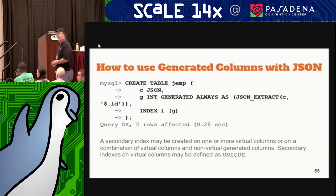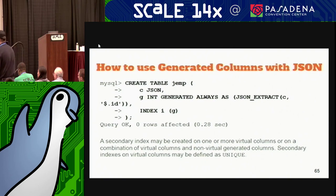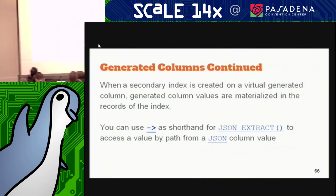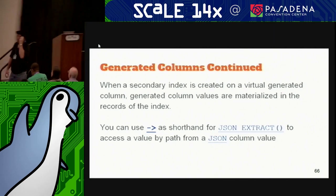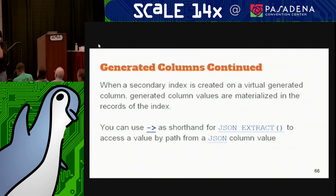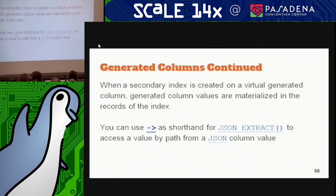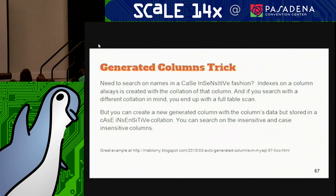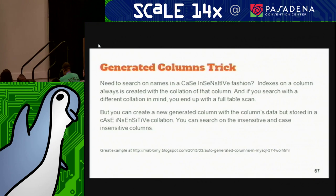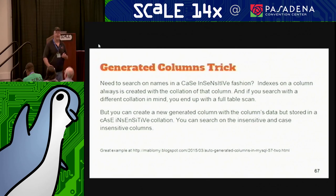It's going to be a secondary index. When a secondary index is created on a virtual generated column, the values are materialized — actually written down in the table. You can use the arrow operator as a shortcut. Generated columns solve the problem of not being able to index the JSON document by itself.